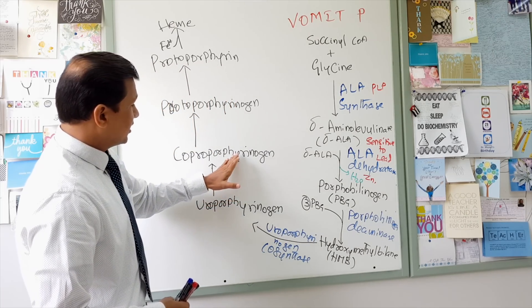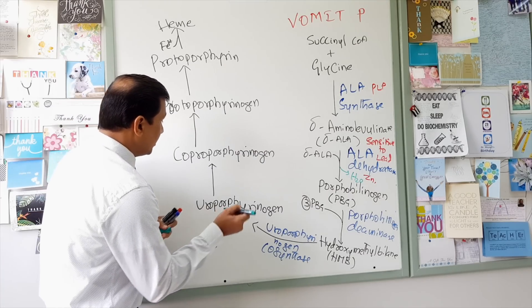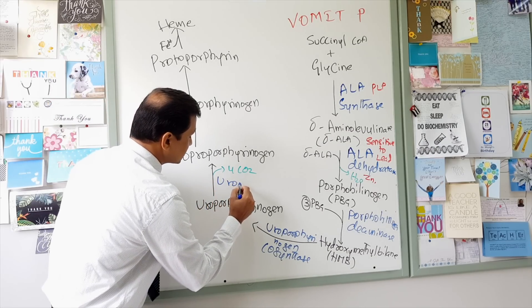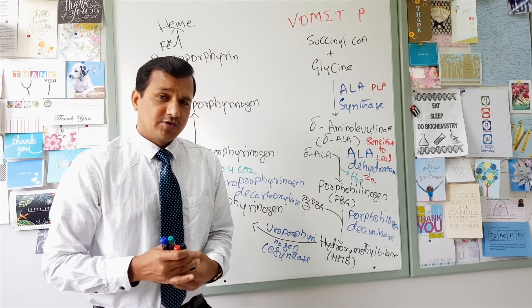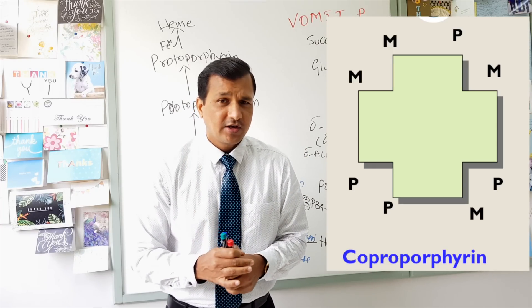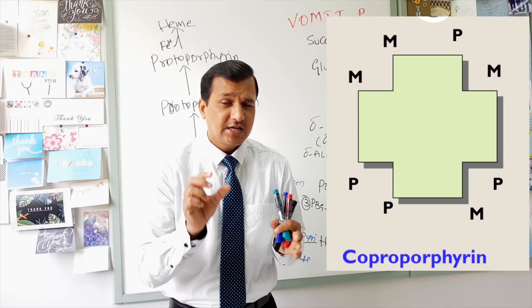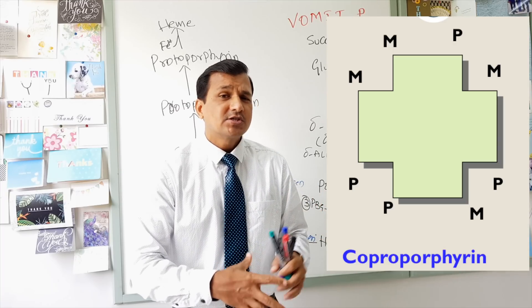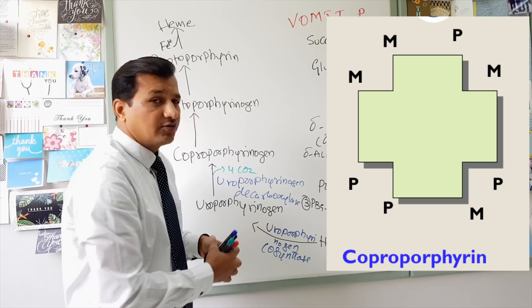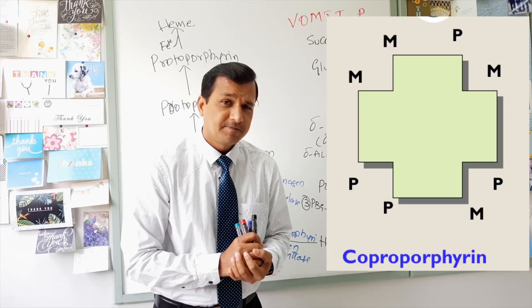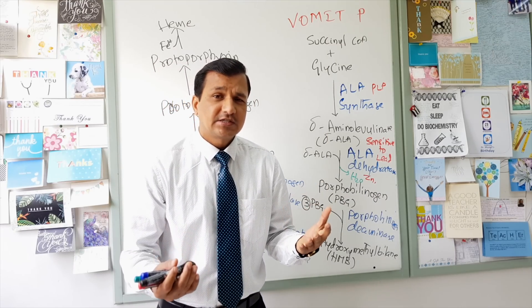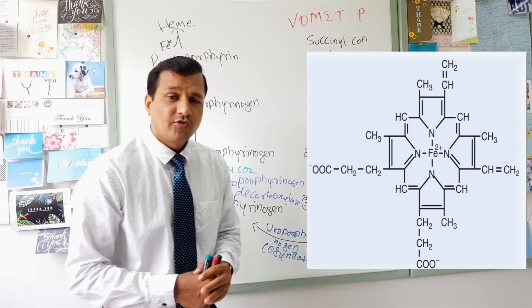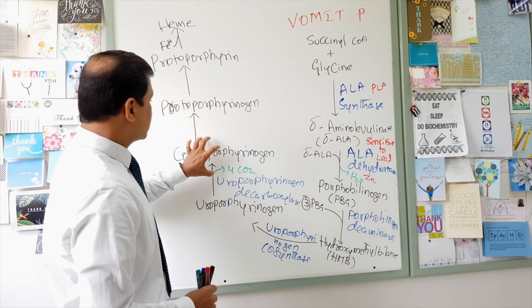Once you get uroporphyrinogen, it will be converted into coproporphyrinogen by an enzyme called uroporphyrinogen decarboxylase. During this process, 4 carbon dioxide molecules are released. The acetate side chains in uroporphyrinogen are converted to methyl groups in coproporphyrinogen — since acetate has 2 carbons and methyl has 1 carbon, converting 4 acetates to 4 methyl groups releases 4 CO2 molecules. Coproporphyrinogen has side chains of methyl-propionate in all four rings.